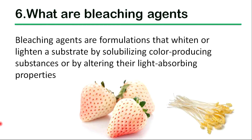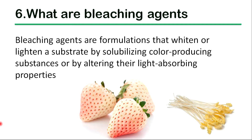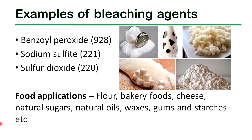The next type of food additive is bleaching agents. They are formulations that whiten or lighten substances by solubilizing color-producing substances or by altering their light absorbing properties. In the food industry, bleaching agents are used to inhibit browning or discoloration of food materials, and they also have antibacterial activity. Benzoyl peroxide, sodium sulphite, and sulphur dioxide are some examples of bleaching agents.